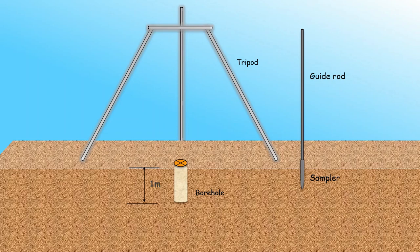Attach the hammer of 63.5 kilograms and anvil to the guide rod. Make a marking of 75 centimeters above the anvil to have uniform height of fall. Fix the centric guide above the borehole as shown, and place the guide rod setup through it.